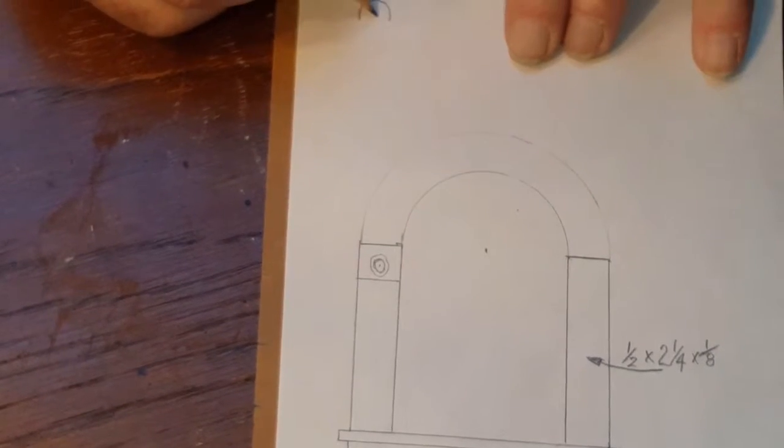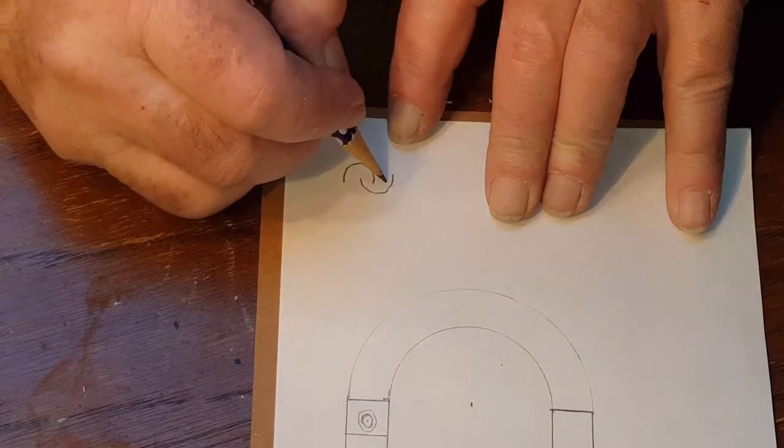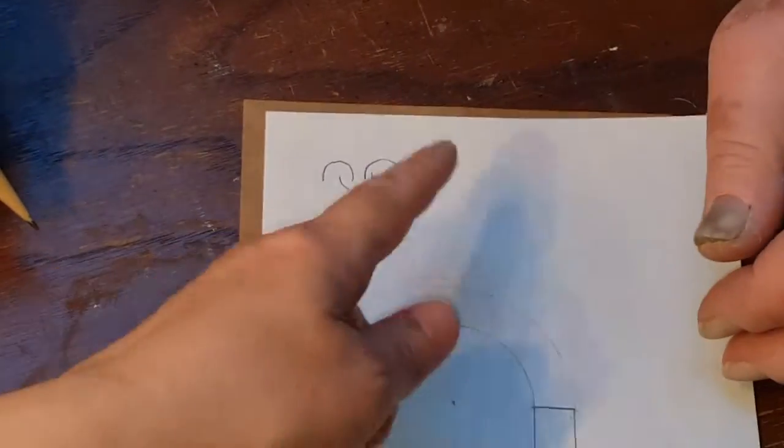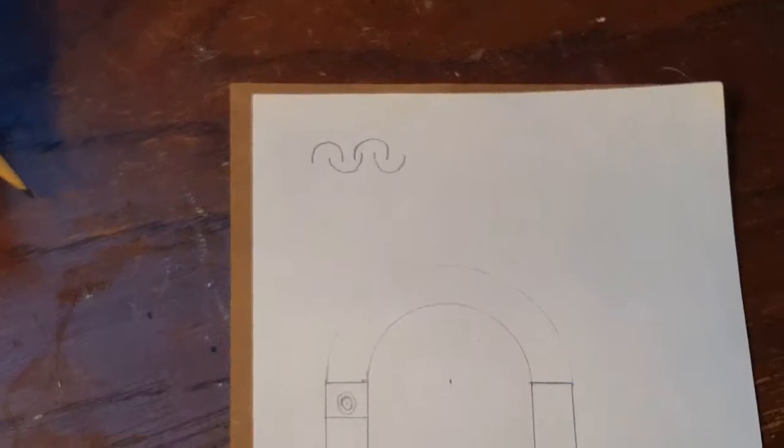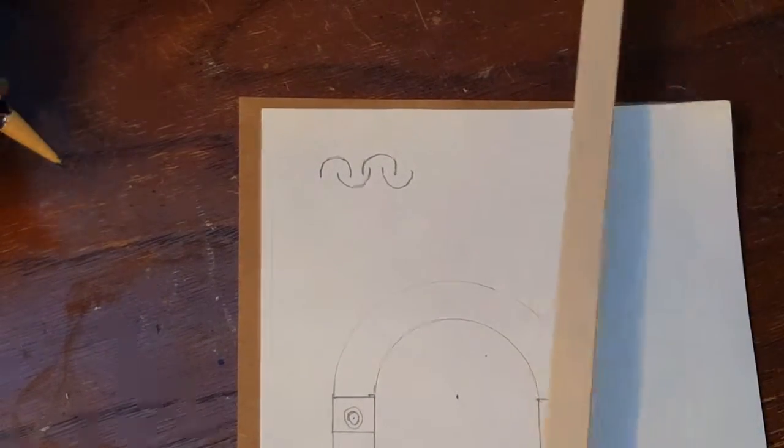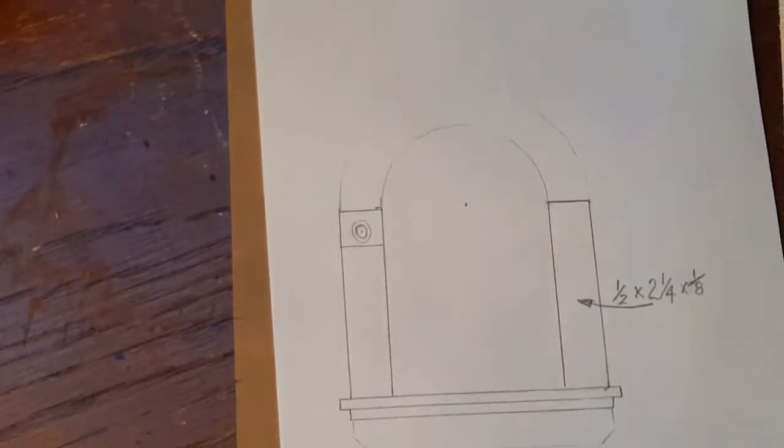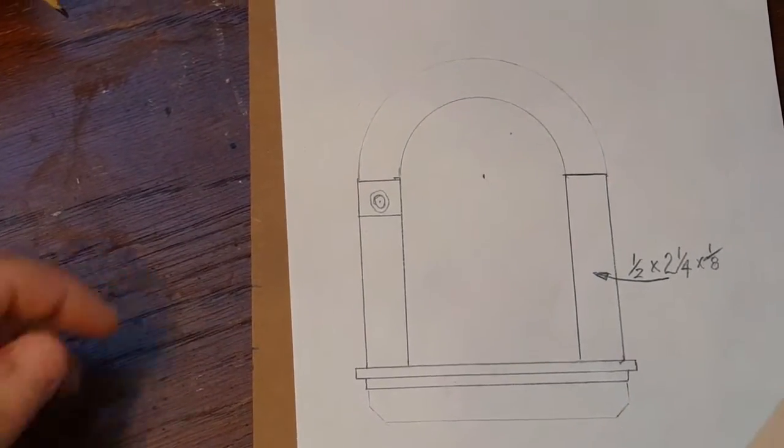So you can put one this way, one that way, one this way, and one that way. And then your straight pieces you could also do the same thing by just cutting them all same times. They go right in there like that.